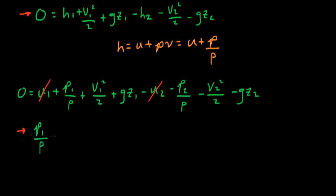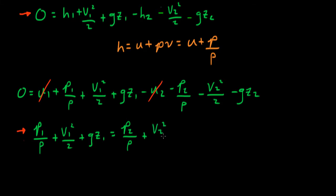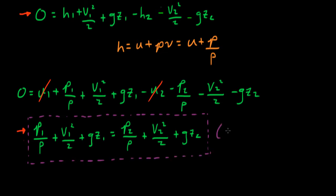We see the pressure at station 1 divided by the density, plus the velocity at station 1 squared divided by 2, plus the acceleration due to gravity times the elevation at station 1, and all of this is equal to the same terms at station 2. This result is the familiar Bernoulli equation.